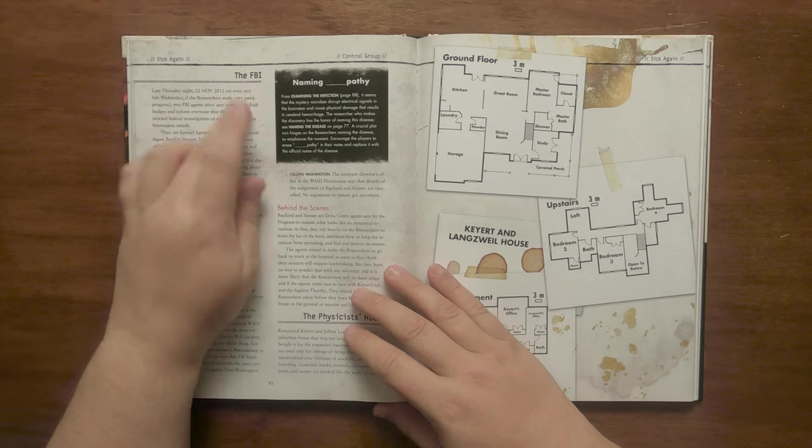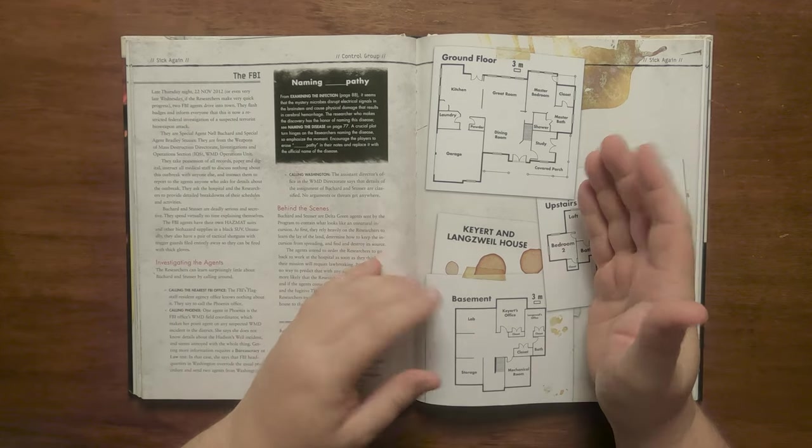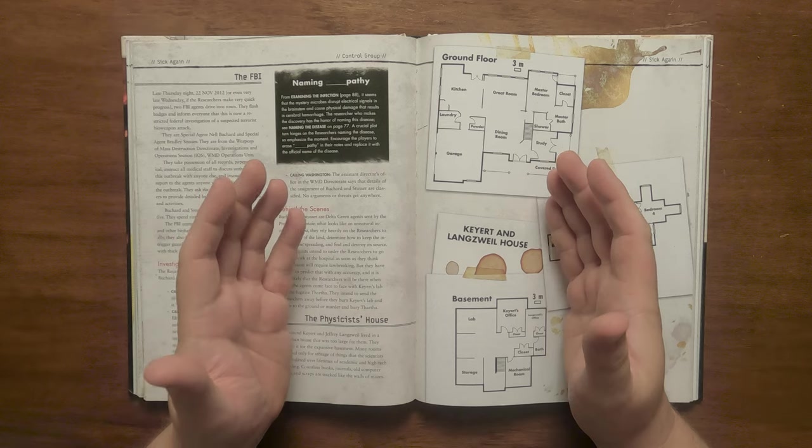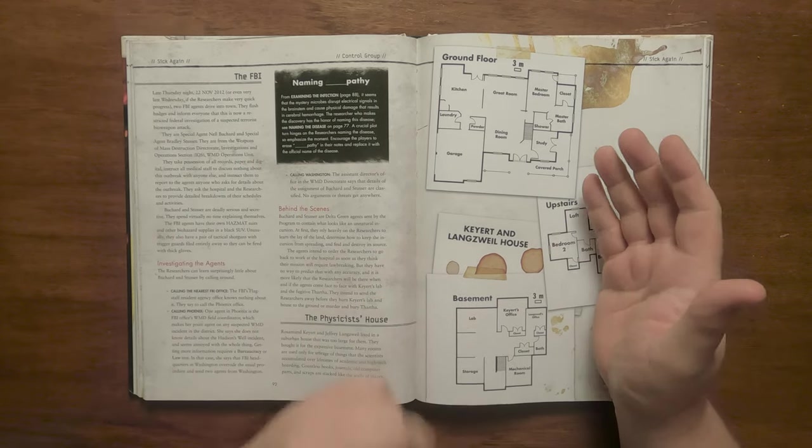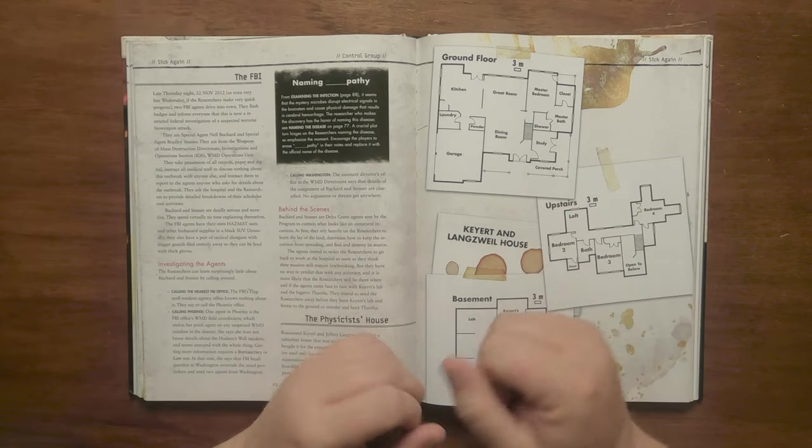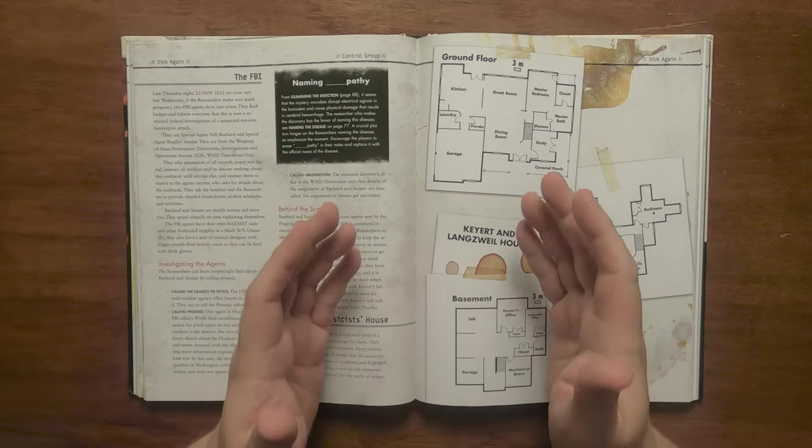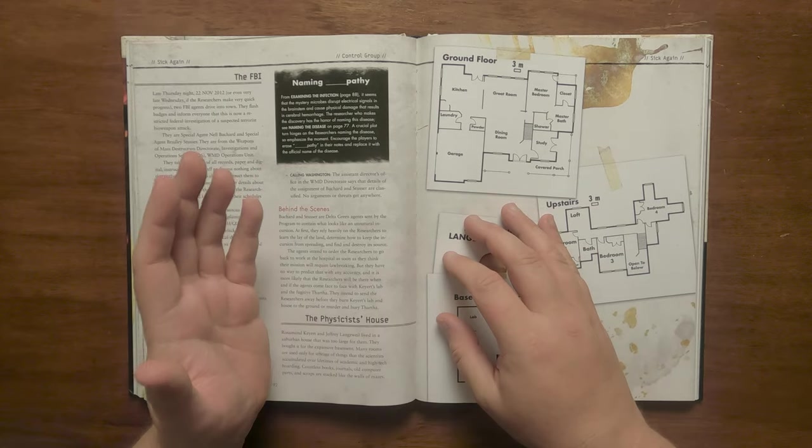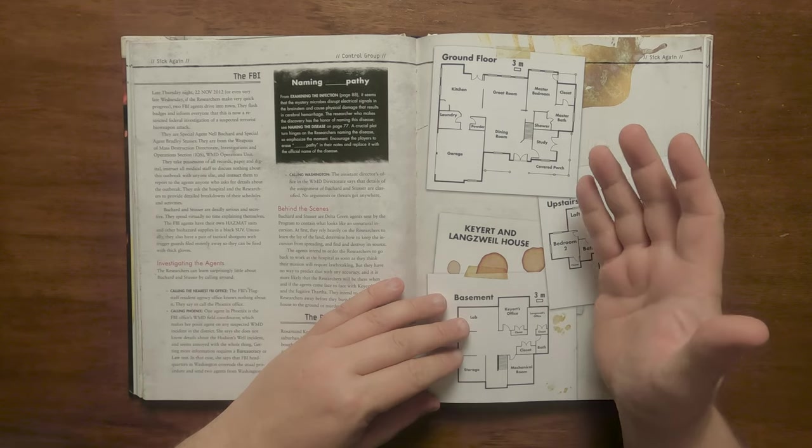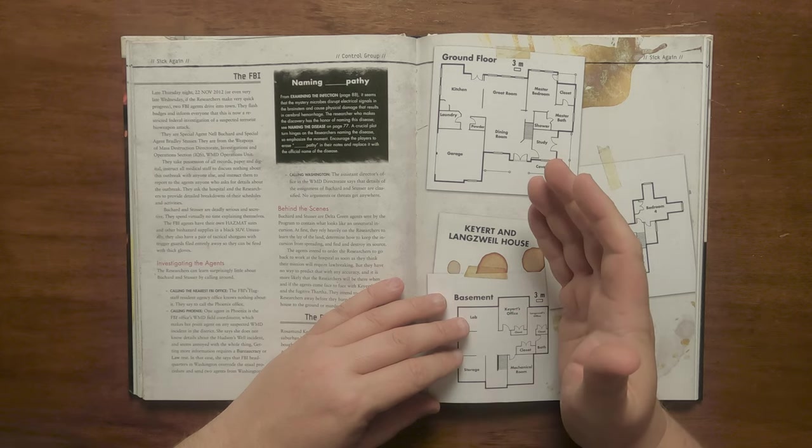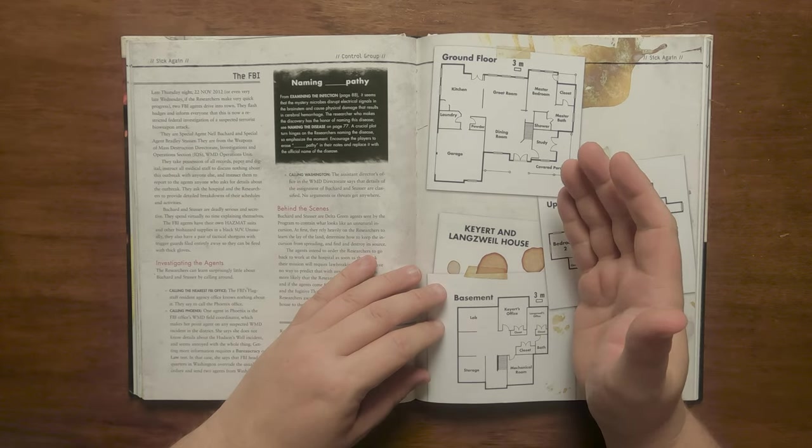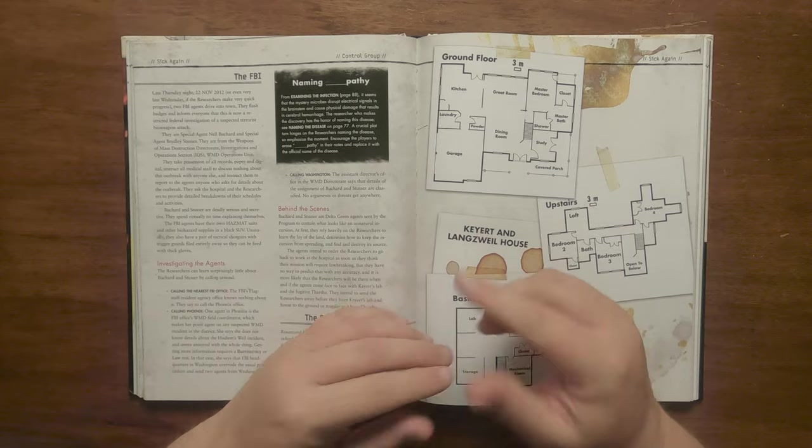The next section is called the FBI. Late on the Thursday evening of the 22nd of November, two FBI agents will arrive in town, flashing badges and telling all and sundry that this is now a federal investigation of a suspected bioweapon by a terrorist cell. They are actually special agents Neil Bouchard and Bradley Stusser from the Weapons of Mass Destruction Directorate Investigations and Operations section. They come in and take possession of almost everything, all records, paperwork etc, and tell the hospital staff not to discuss the outbreak with anybody and report back to them about anyone asking for details. Additionally, they ask the hospital and researchers to do breakdowns of their activities. They do not explain the reasons to anybody and are deadly serious, even having their own hazmat suit in a black SUV. They also have tactical shotguns with the finger guard removed. This is so they can be fired using gloves.